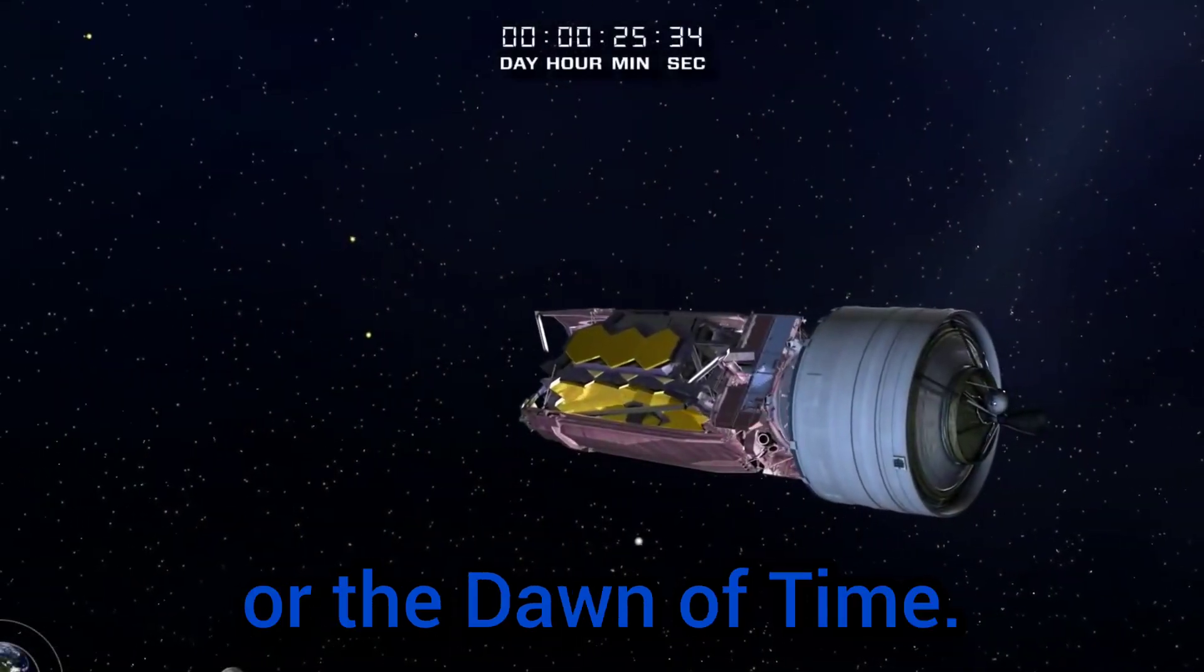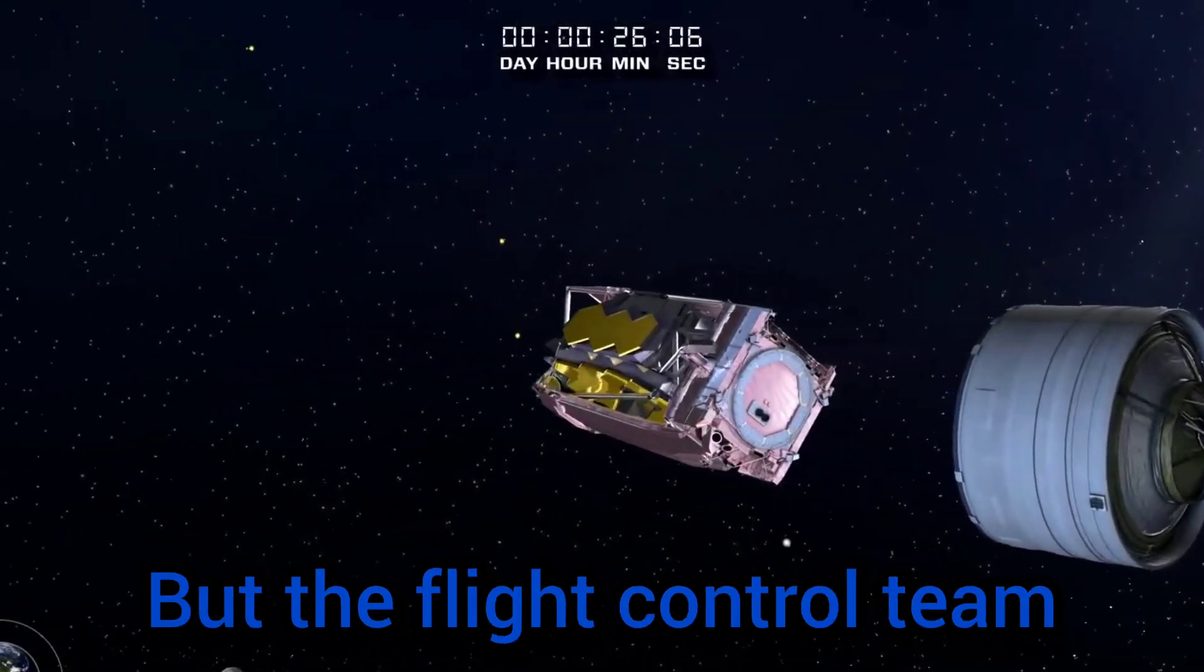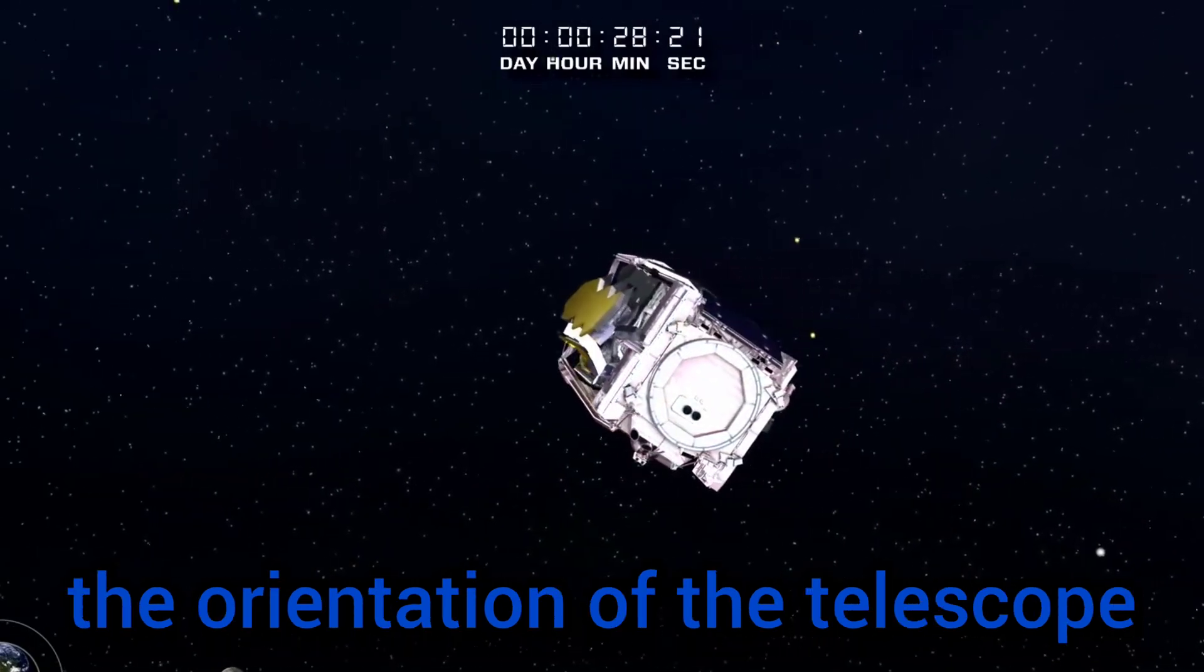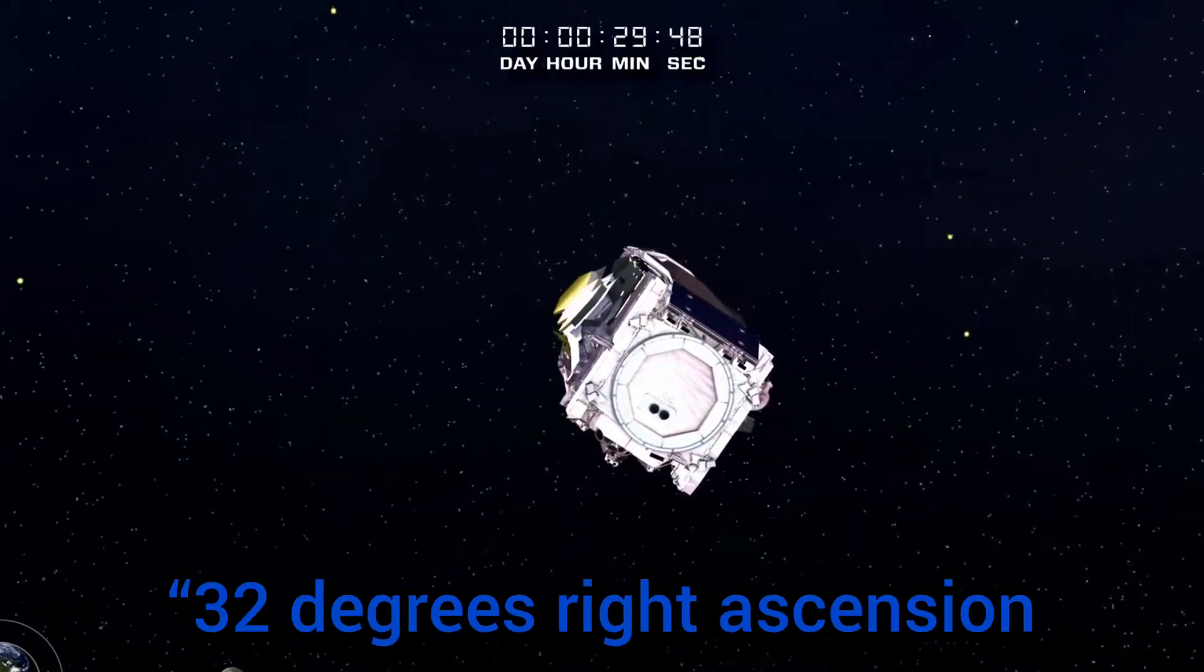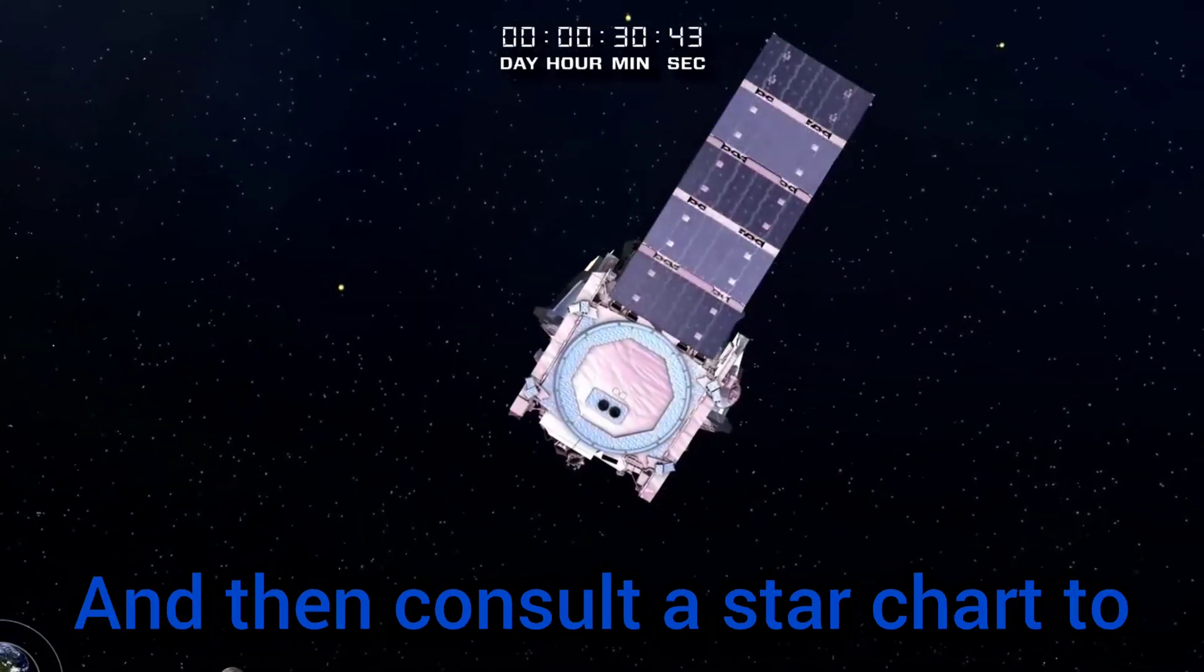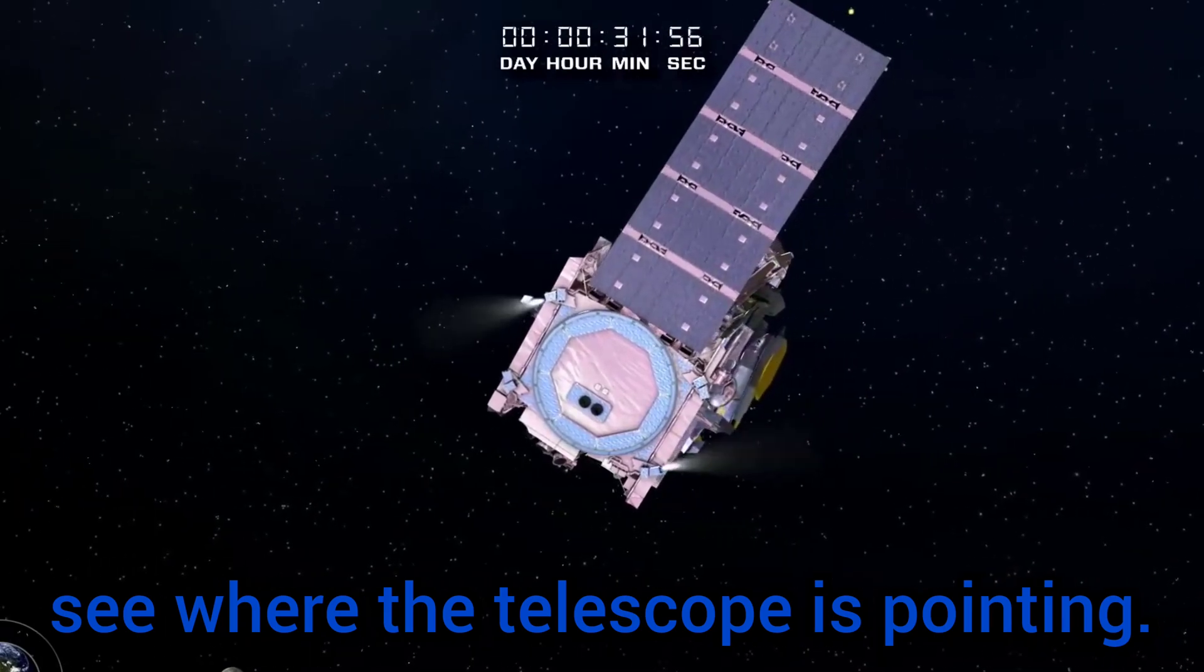But the flight control team can read out data describing the orientation of the telescope—for example, 32 degrees right ascension, 12 degrees declination—and then consult a star chart to see where the telescope is pointing.